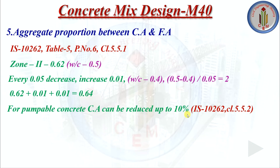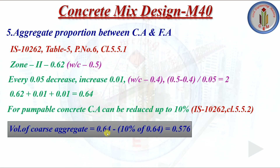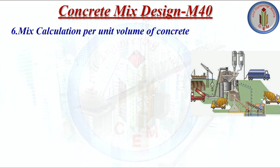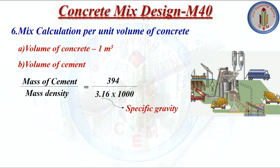Step 6 is mix calculation. Per unit volume (1 m³) of concrete: Volume of cement = mass of cement / (specific gravity × 1000) = 394 / (3.16 × 1000) = 0.125 m³. Volume of water = 157.6 / (1 × 1000) = 0.1576 m³.